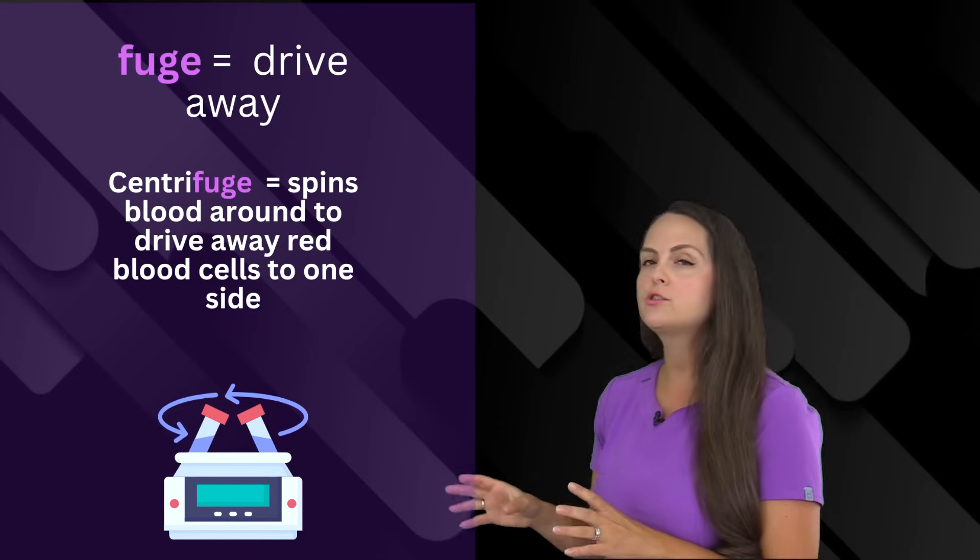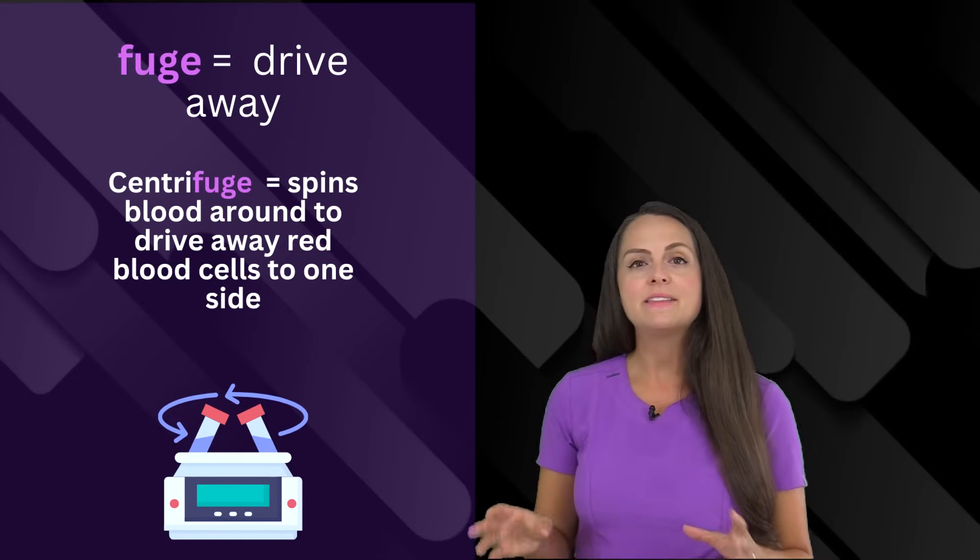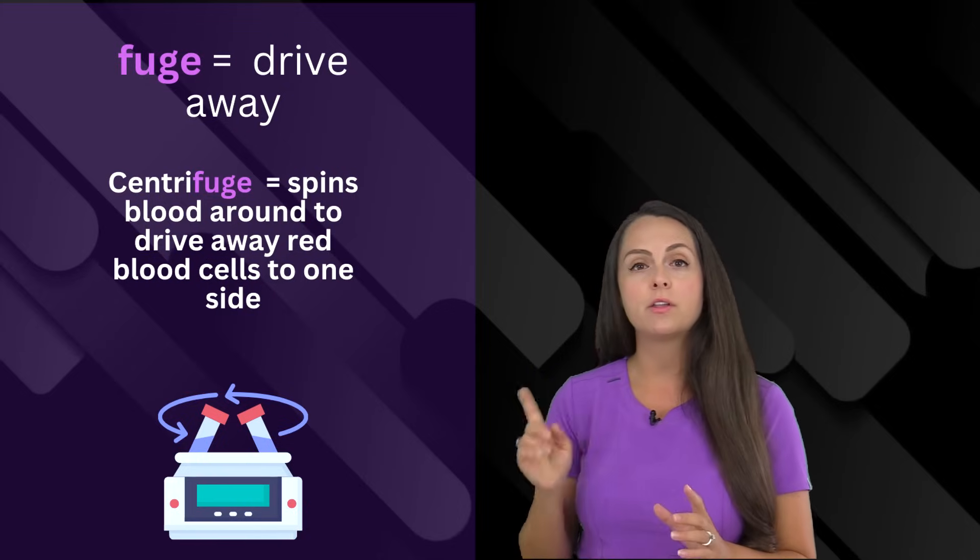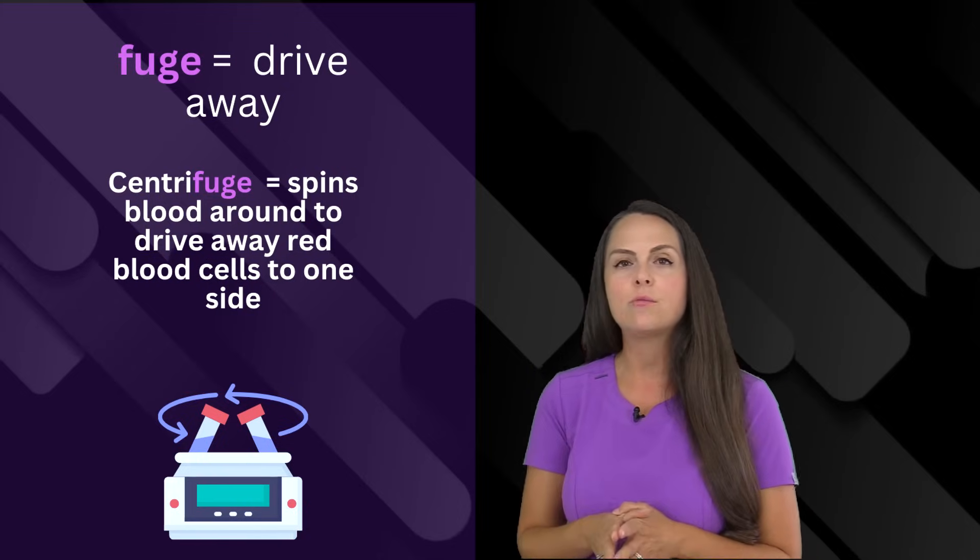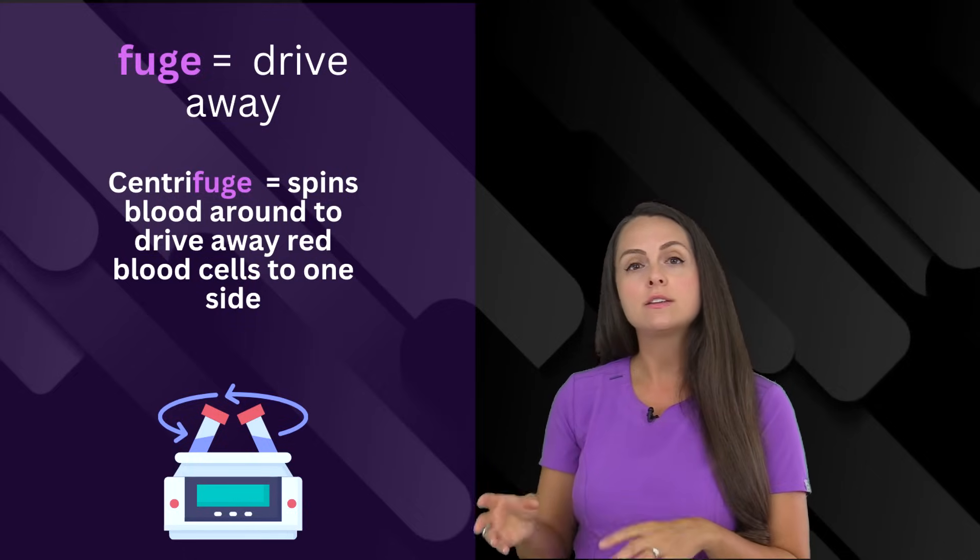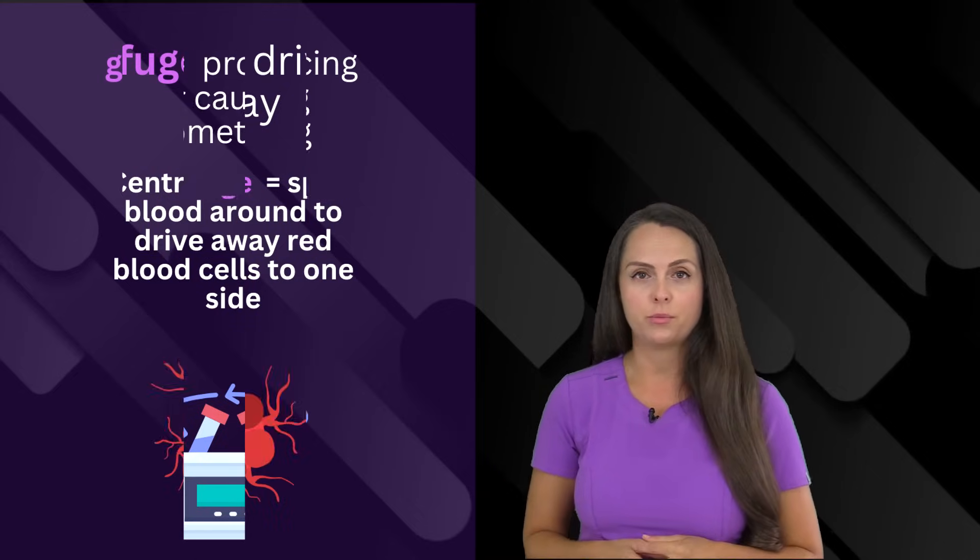Then there's fuge, which means to drive away. In the laboratory setting, there is a device called a centrifuge. And this device actually spins blood around really fast. And it will drive away red blood cells from the center and cause it to collect in one side of the tube.